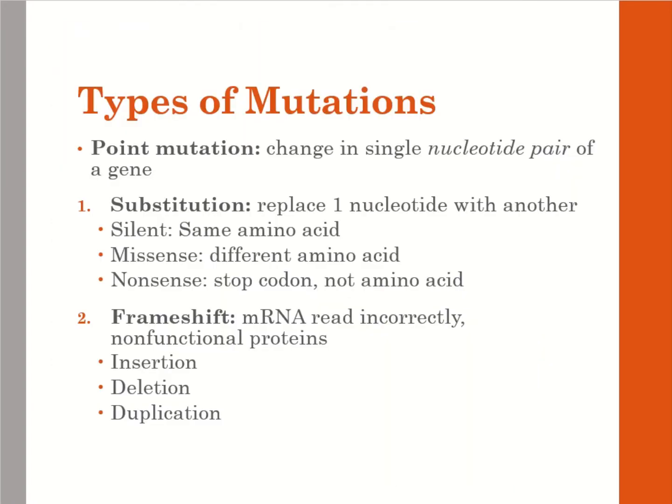Other types of mutations include point mutations, which are a change in a single nucleotide pair of a gene. Within that, there's substitution — replacing one nucleotide with another. A silent mutation is when a nucleotide gets replaced but it still codes for the same amino acid. In a missense substitution, one nucleotide gets replaced and codes for a different amino acid.